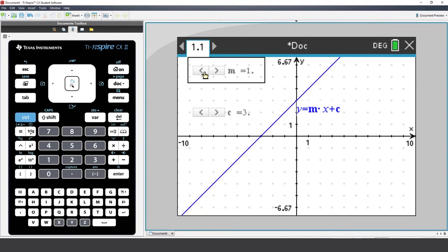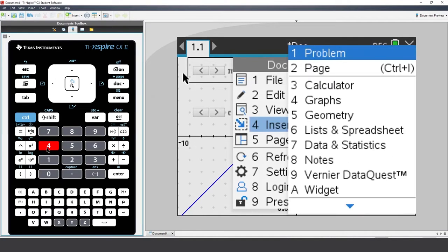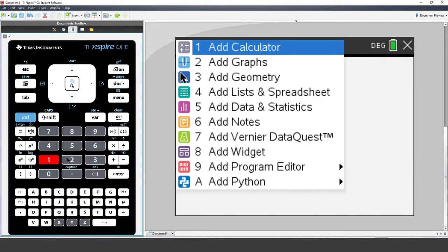Now let's explore a quadratic function. Press the Document key and insert a new problem. The new problem means we can use any of the previous parameters, since variables are not transferred between problems.